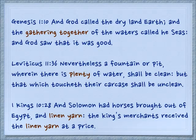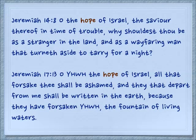And again, a physical piece of cloth — 1 Kings 10:28, 'And Solomon had horses brought out of Egypt and linen yarn, and the king's merchants received the linen yarn at a price.' Jeremiah 14:8, 'Oh the hope of Israel' — this is the mikveh. It's different than how we think of the word 'hope' — we'll get to that in a minute.